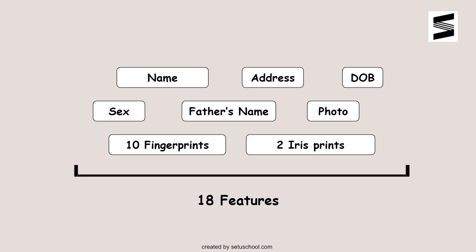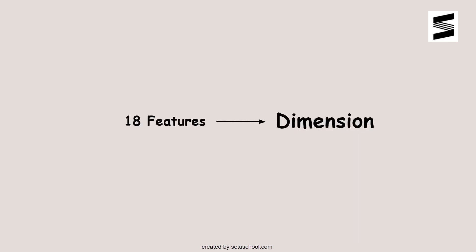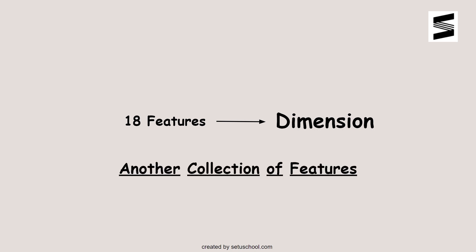Now, if you think about how many features are there in your Aadhaar card — there is your name, father's name, date of birth, sex, address, fingerprints, two iris prints, and photo of your face. Including all of them, there are exactly 18 features needed to uniquely identify one person. Here, the number of independent features, that is 18, is called the dimension of the population — that is, our vector space.